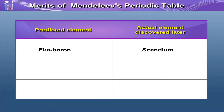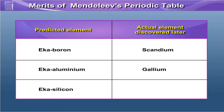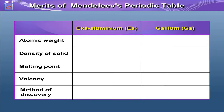Another predicted element was Eka-Aluminium; the actual element discovered later was Gallium. He also predicted another element, Eka-Silicon; the actual element discovered later, similar to it, was Germanium. Let us now compare the properties of Eka-Aluminium (EA) and Gallium (Ga).